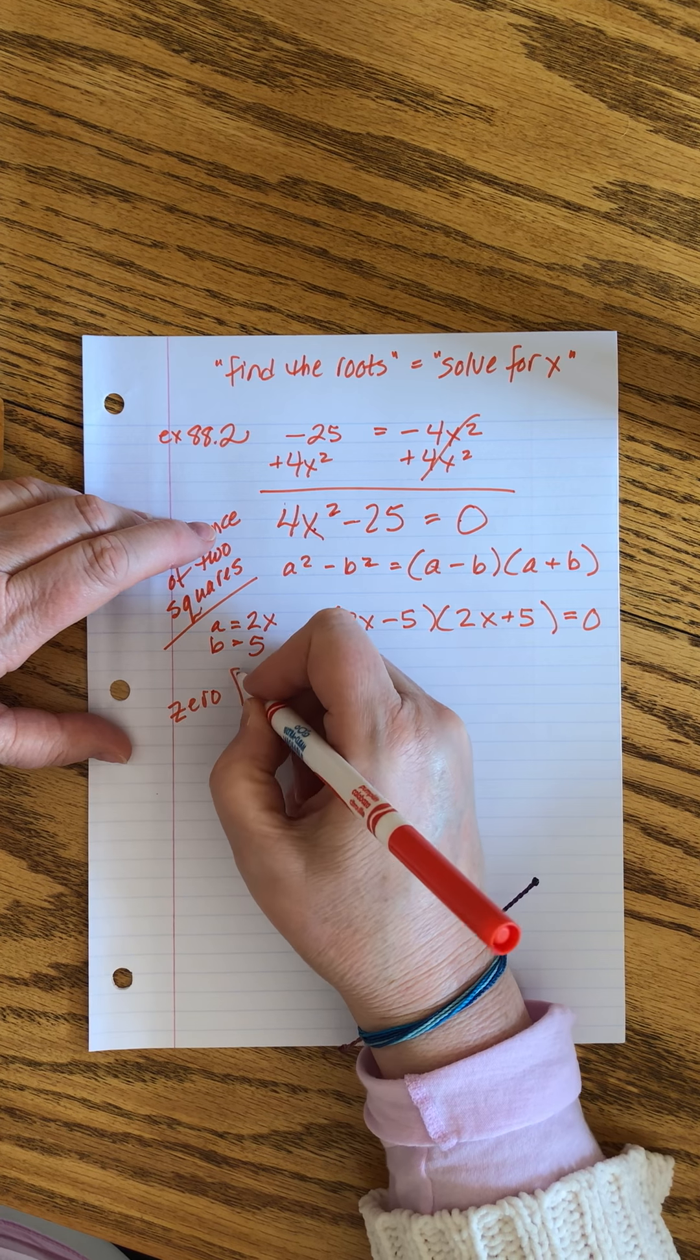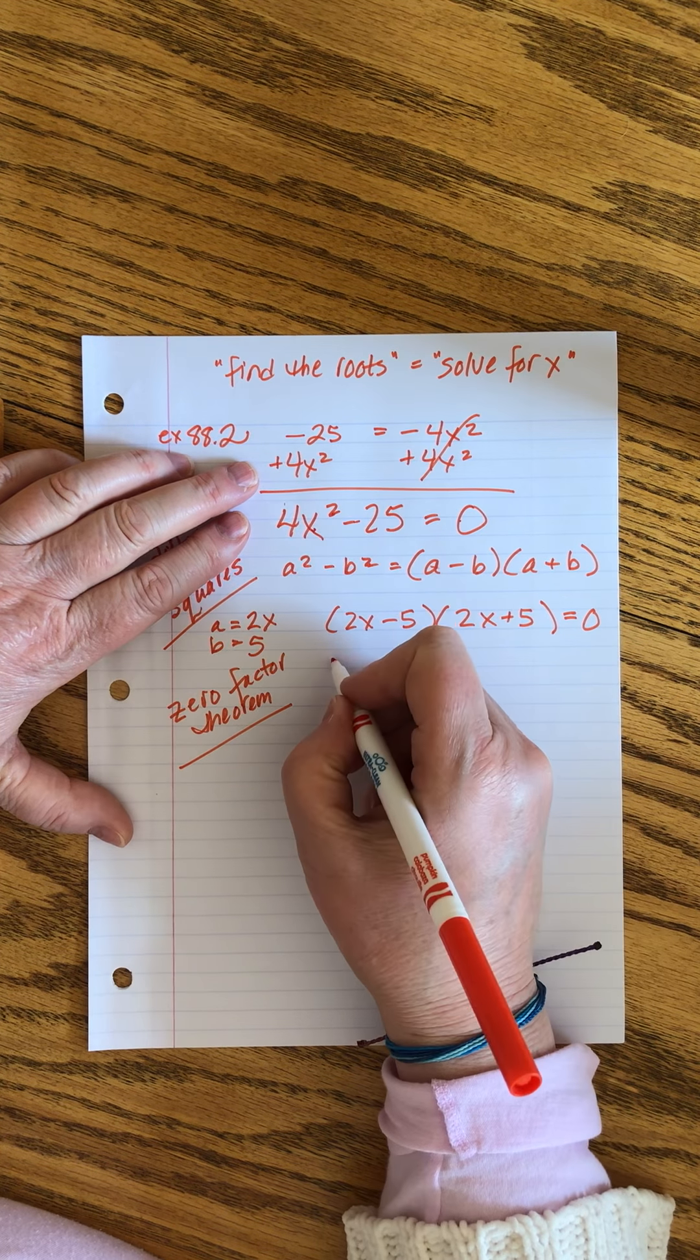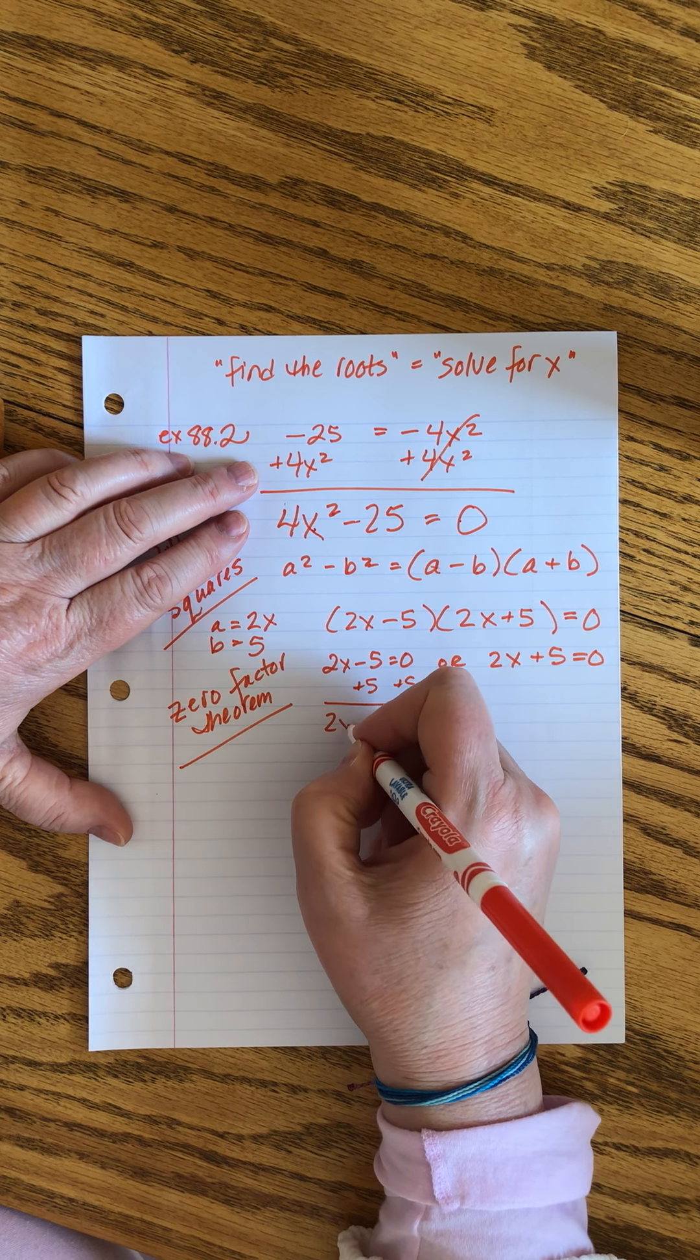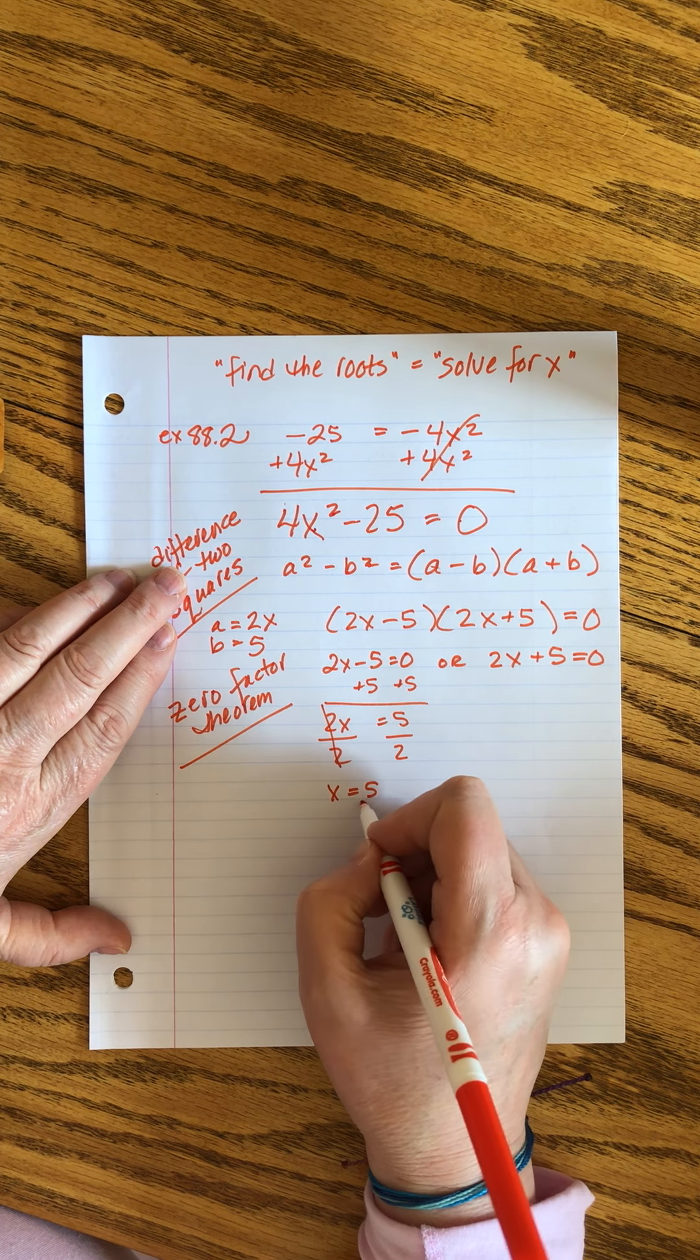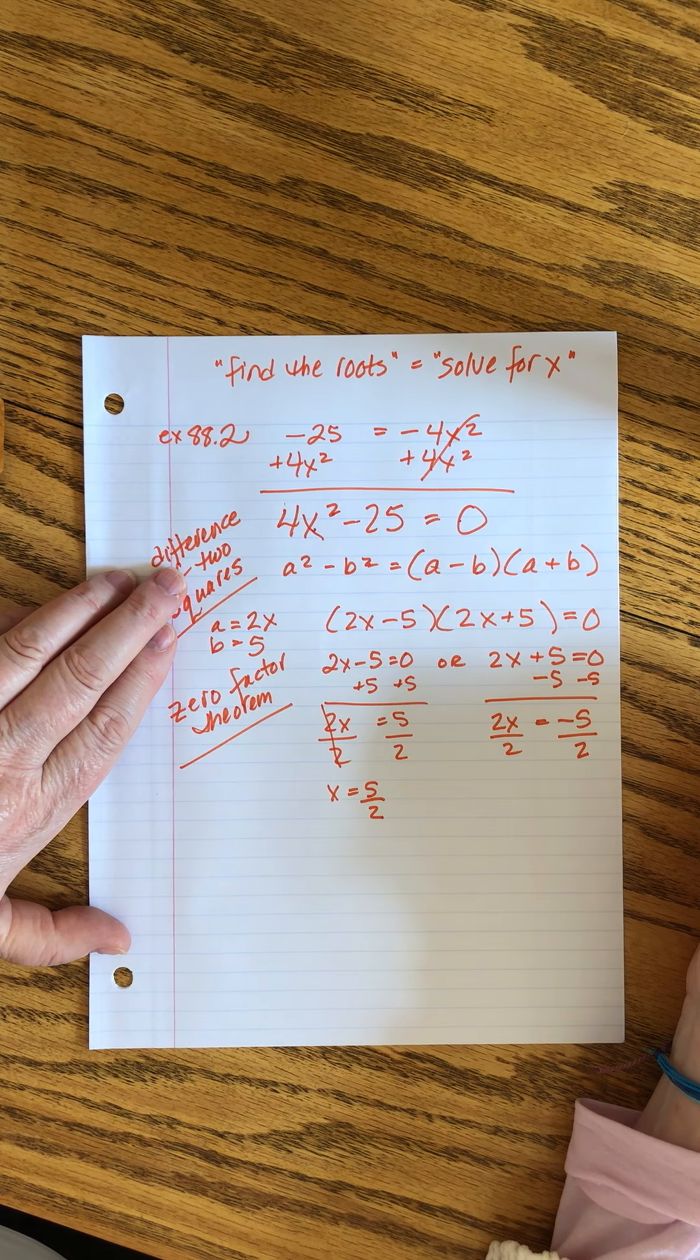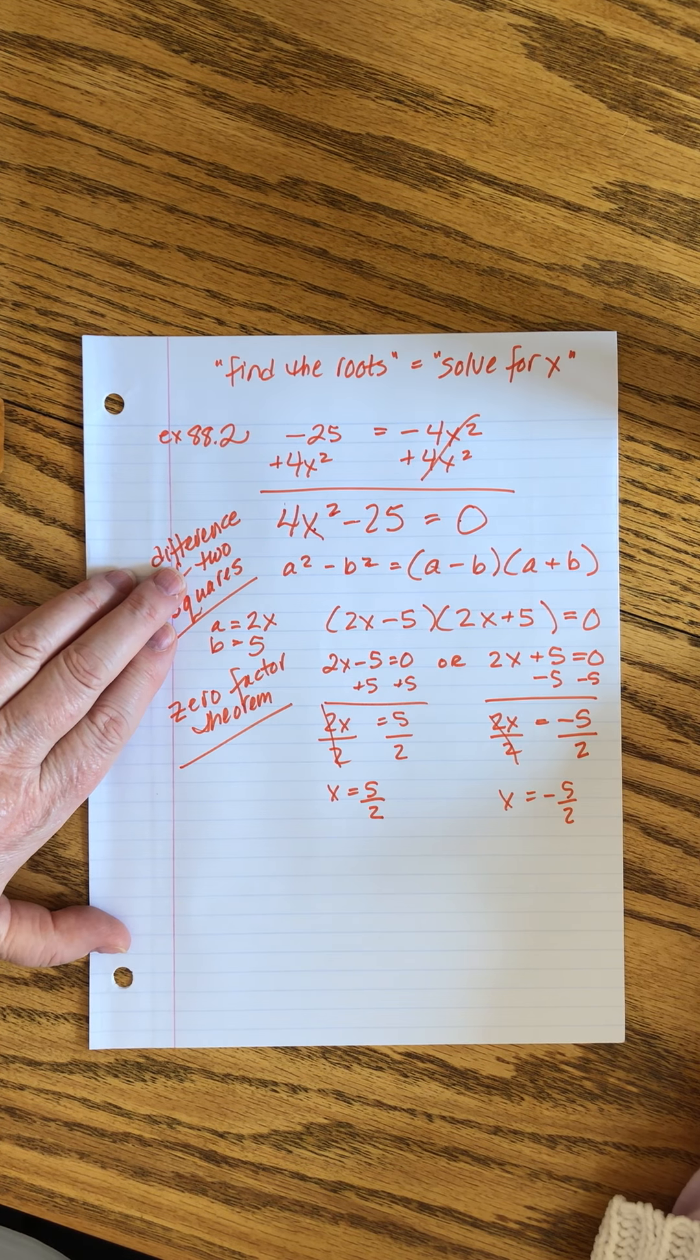So now I break out my zero factor theorem again. If I'm multiplying two things together that equal 0, then one has to be 0 or the other has to be 0. So I write 2x minus 5 equals 0 or 2x plus 5 equals 0. Hit them both with my algebra stick, and we get x equals 5 over 2 or x equals minus 5 over 2.